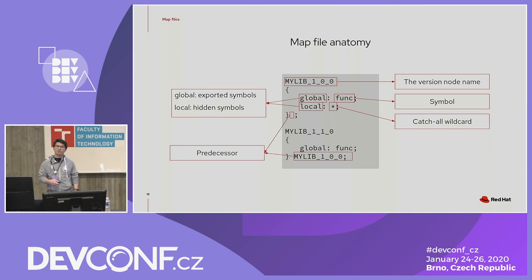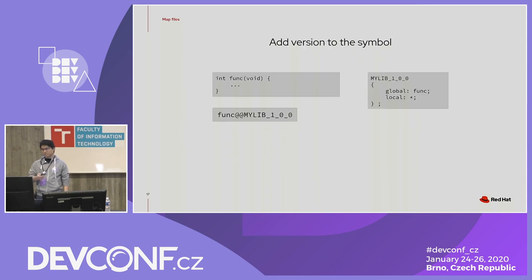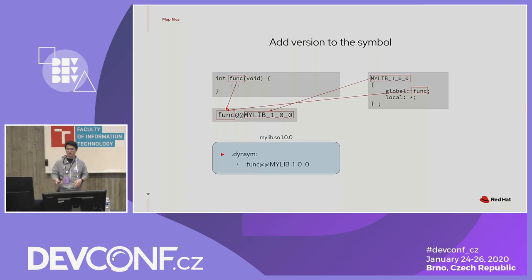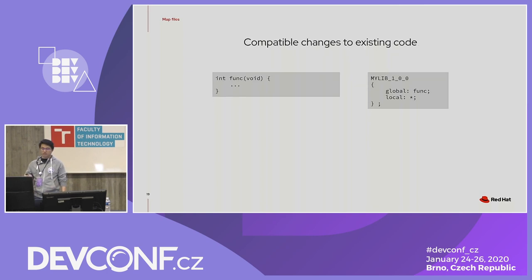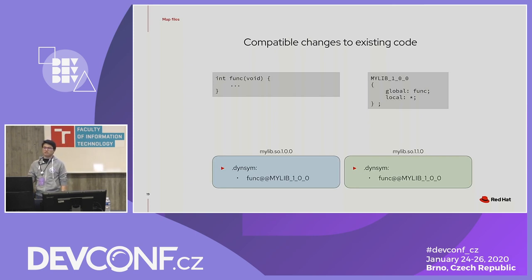The predecessor entry is not really necessary in the map file, but it's a good idea to keep this information so you can see what the original version was on which the new version is based. This is how the version is added to the symbol: it matches the name you put in the map file with your implementation and adds the version information to the symbol. When you compile, you get your shared library with the version information added to the symbol. If you are making changes to the code that are truly compatible, you can just do them — it will not affect the behavior, and the new version will work just as the old one.